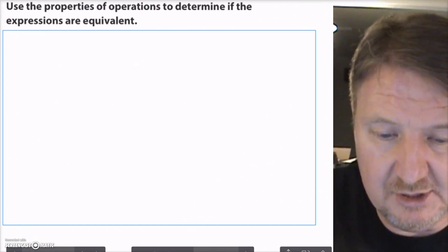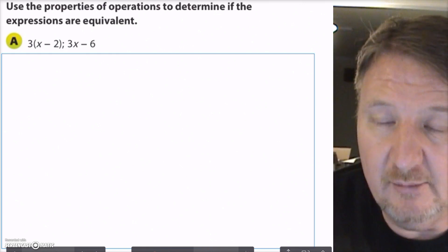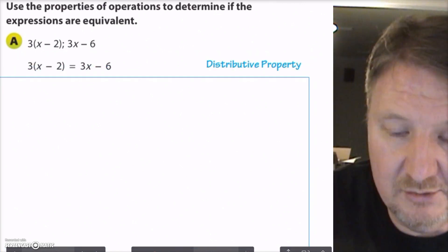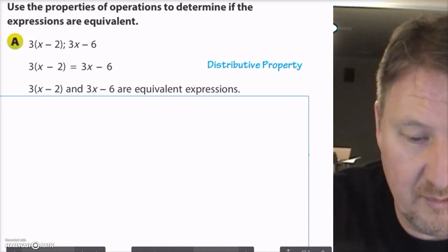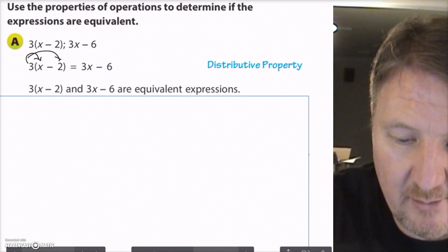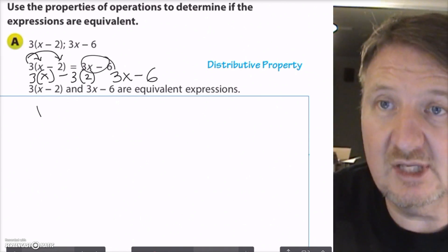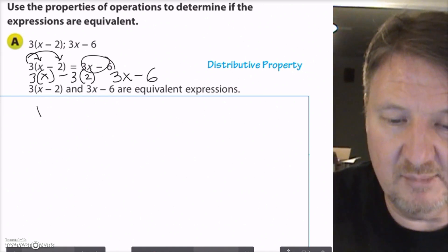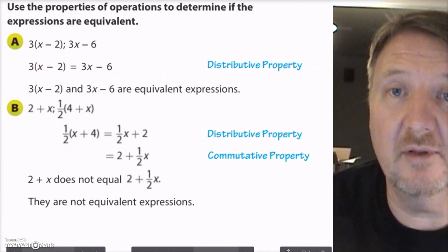So we're going to use these properties to solve a couple equations here. Not solve them, but determine whether or not they're equivalent. So here we have 3 times x minus 2, and we have 3x minus 6. So the first thing we want to do is use the distributive property. I'm going to multiply 3 times x, and I want to multiply 3 times 2. So what we wind up with is 3 times x minus 3 times 2, and then we just go ahead and say, 3x minus 6, which is the same as this one. So 3 times x minus 2, and 3x minus 6 are equivalent based on that feature there.